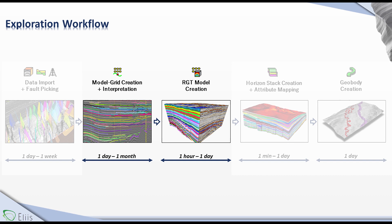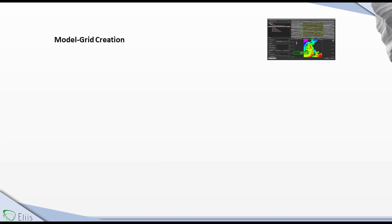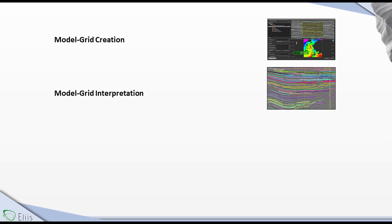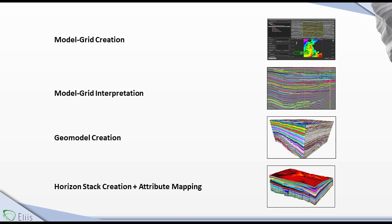The production of an accurate RGT model is essential for the proper creation of subsequent exploration objects such as HorizonStack and Geobodies. This tutorial covers the creation of an optimized model grid relative to the seismic data, the best practice for the model grid interpretation, the RGT model creation, and the HorizonStack creation including the mapping of attributes.